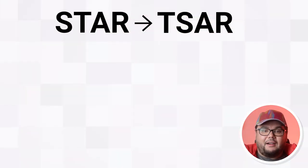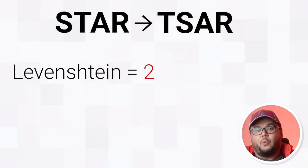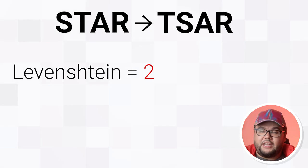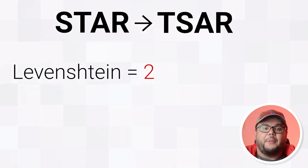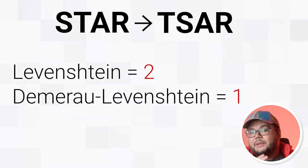There are other algorithms that also allow changing the order of letters. For instance, 'star' and 'tsar' are two positions away using Levenshtein distance. But using the Damerau-Levenshtein, they would only be one operation away. The Damerau-Levenshtein is an extension of Levenshtein that allows transpositions of adjacent characters.